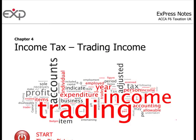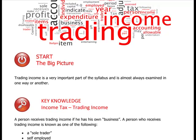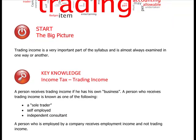Chapter 4 - Trading Income. This is trading income, a very important part of the syllabus and is almost always examined in one way or another. Trading income is received by a person running their own business. A person who receives trading income is known as a sole trader - they operate on their own.